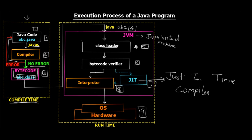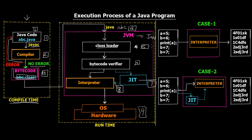Now let's talk about the JIT compiler. To understand it, we'll look at two cases. In case one, we do not have a JIT compiler — assume that part is removed from the execution process. We have five lines of code in abc.class, already compiled. We're at the stage where abc.class is being transferred into the JVM to the interpreter.